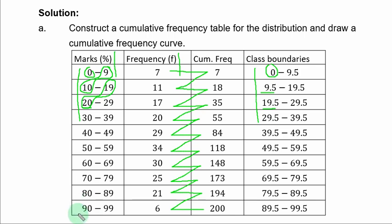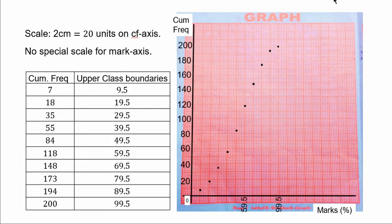To get the lower class boundary, subtract the boundary value from the lower class limit: 10 minus 0.5 is 9.5, 20 minus 0.5 is 19.5, and so on. To get the upper class boundary, add the boundary value to the upper class limit: 9 plus 0.5 is 9.5, 19 plus 0.5 is 19.5, 29 plus 0.5 is 29.5, continuing to 99 plus 0.5, which is 99.5.